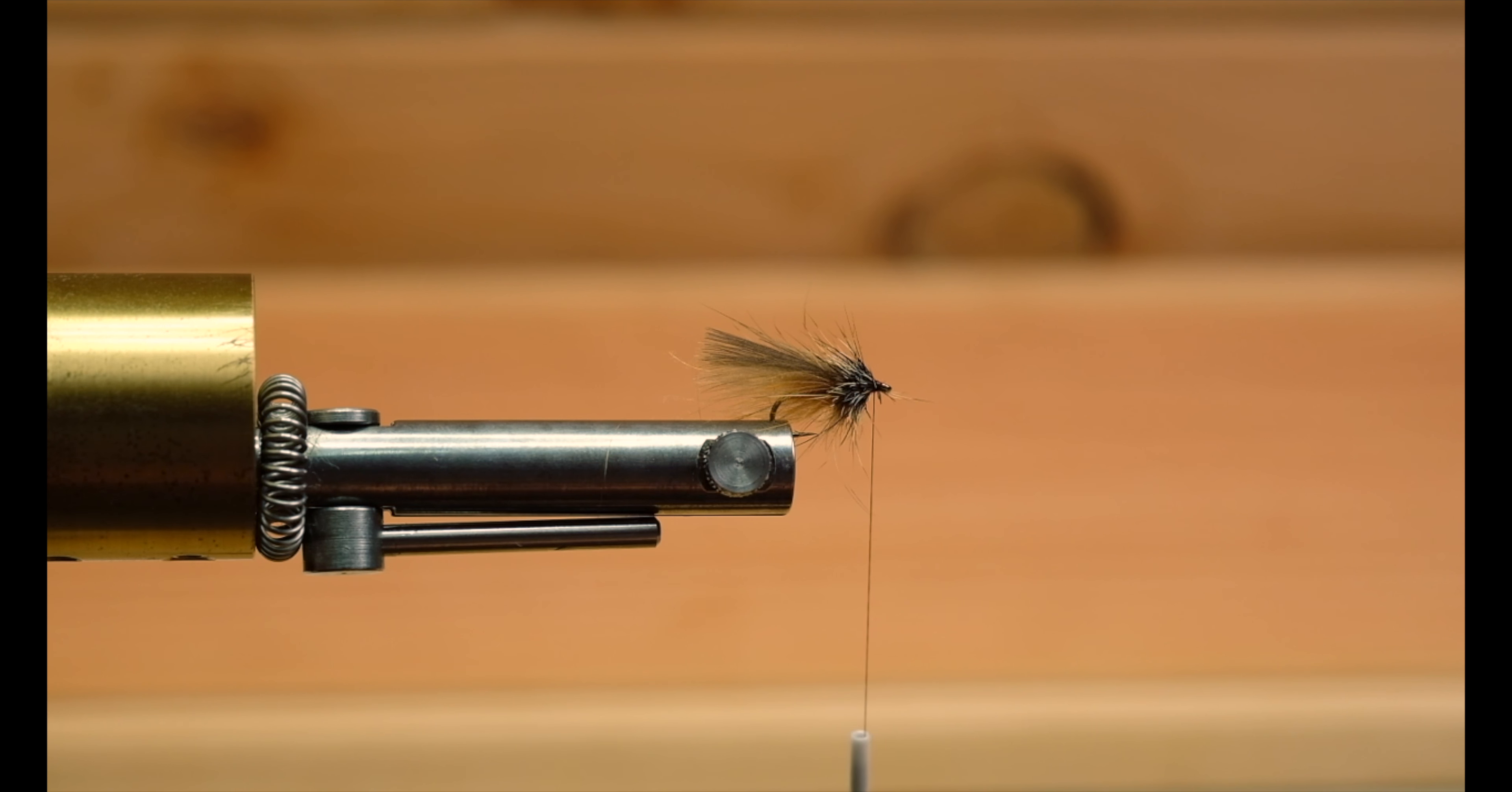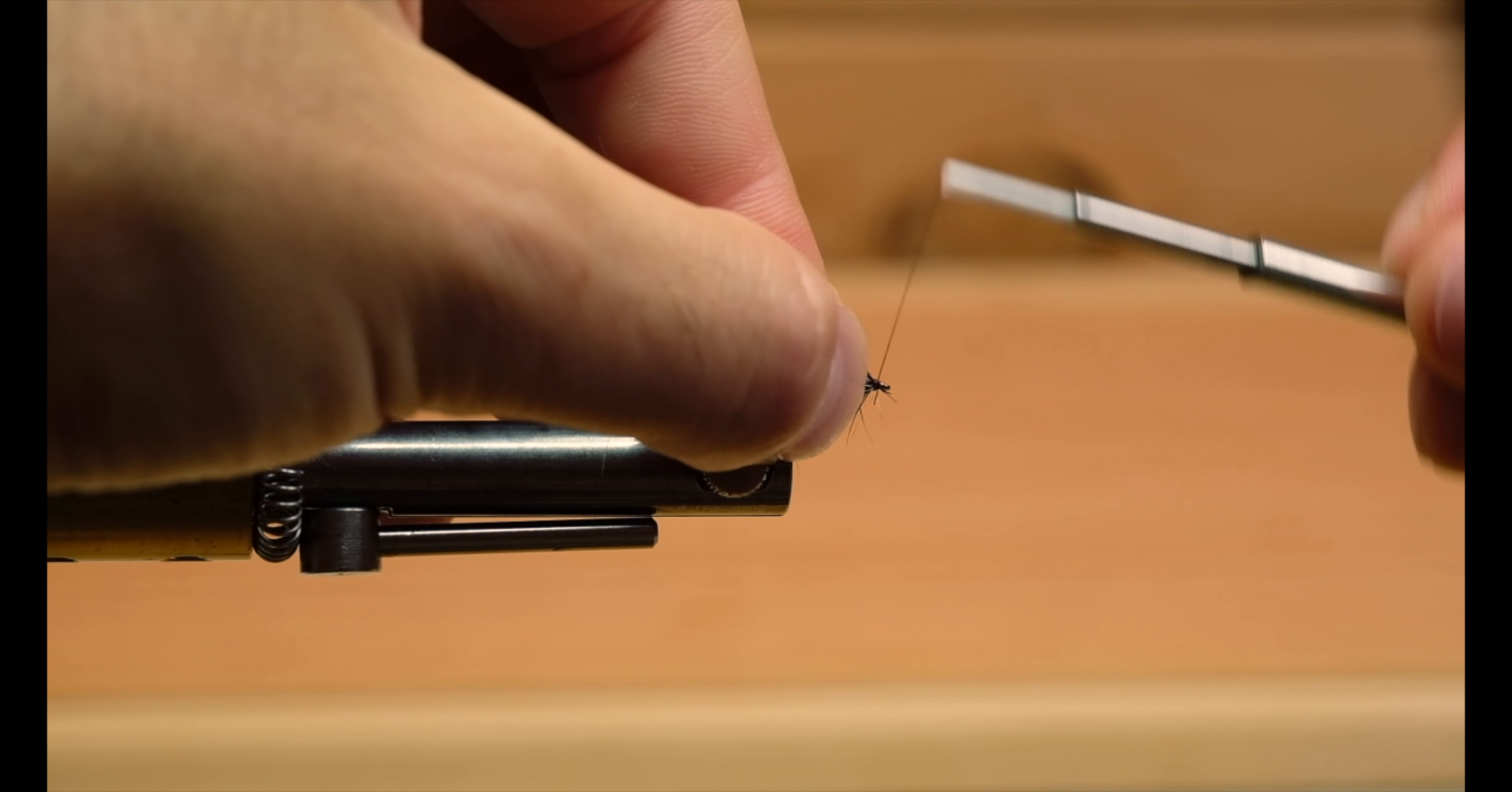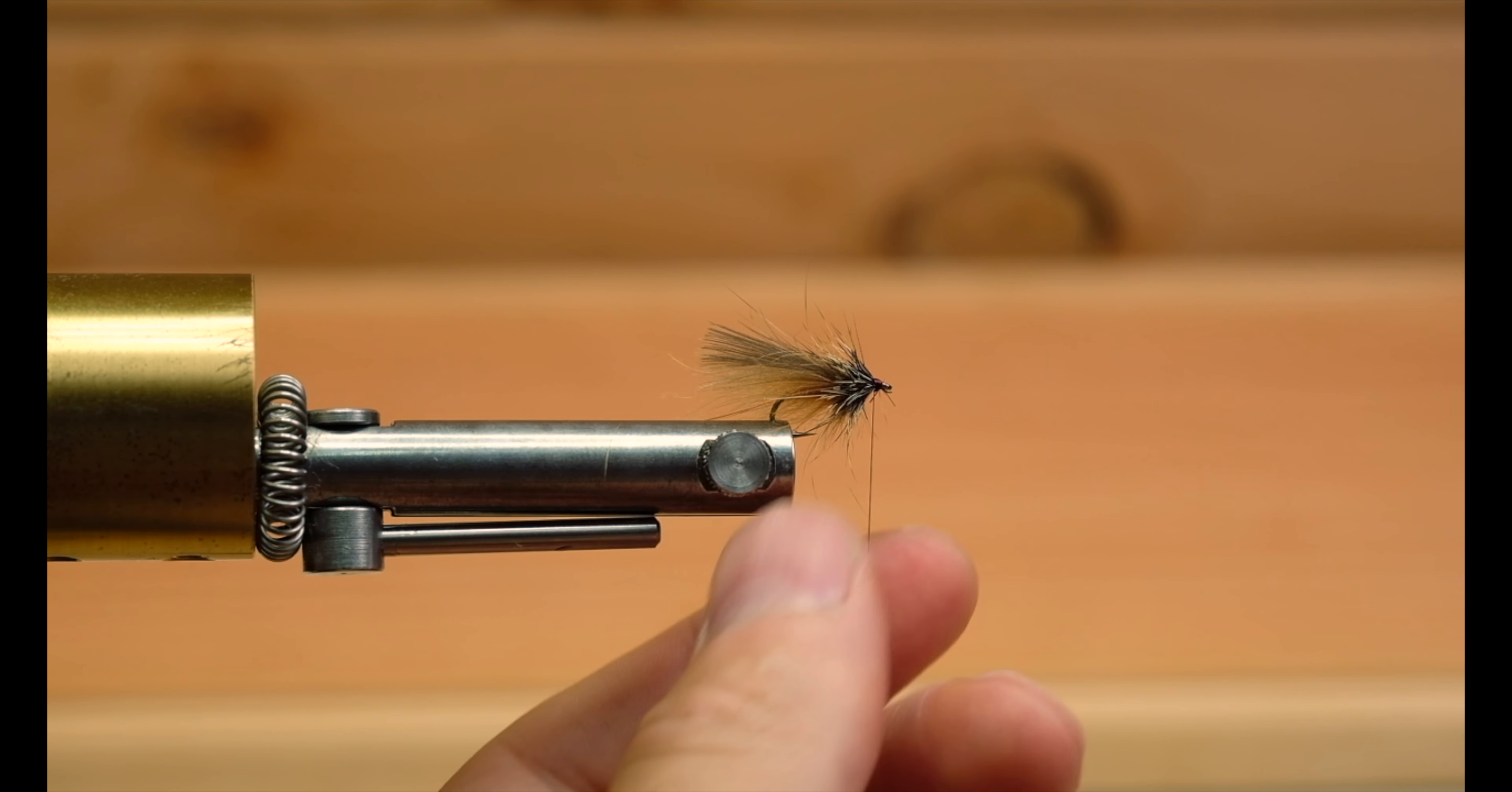Trim away the loop. What I'll do is brush back all the little guard hairs, trying to catch them with my thread. Create a nice little head on there. Now just take your whip finisher and finish the fly. This fly floats really well and the fish love it. I think it's important to use both hare and squirrel because the hare is a little bit longer and it actually gives the fly a really low float profile on the water.